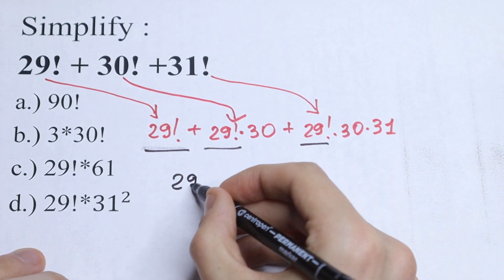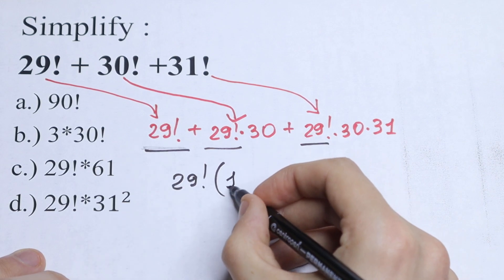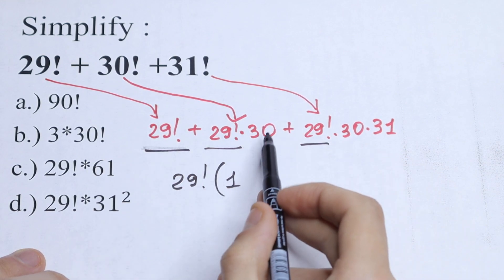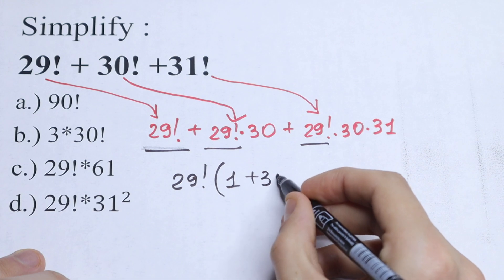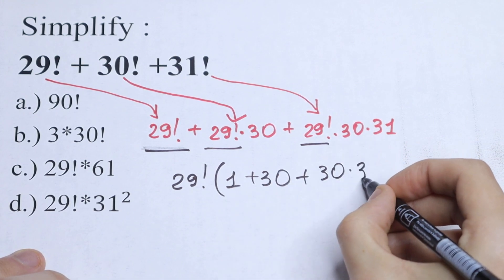What we will have? 29 factorial. What we will have in our parentheses? From here we have only 1. From here we have only our 30 plus 30. And from here we have only our 30 times 31.